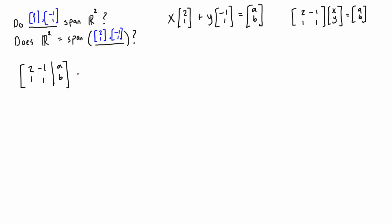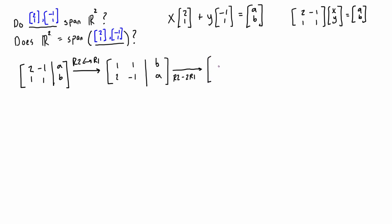The first thing we want to do is switch the two rows. Elementary row operation: R2 swap with R1. Then we want to reduce the first column entry to zero, so the next row operation is R2 minus 2 times R1. Row one is unaffected. Then we have: 2 minus 2 times 1 gives zero; negative 1 minus 2 times 1 gives negative 3; and A minus 2 times B gives A minus 2B.